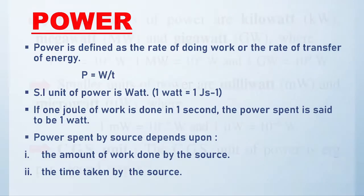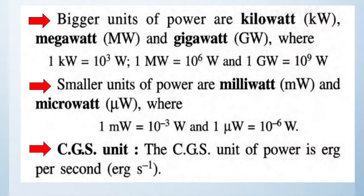To calculate power, we use the unit watt. For larger values of power, we use kilowatt, and even larger are megawatt and gigawatt. Kilowatt is commonly used in our electricity meters and appliances. Megawatt and gigawatt are used for electricity production. 1 kilowatt = 10³ watts, 1 megawatt = 10⁶ watts, and 1 gigawatt = 10⁹ watts.